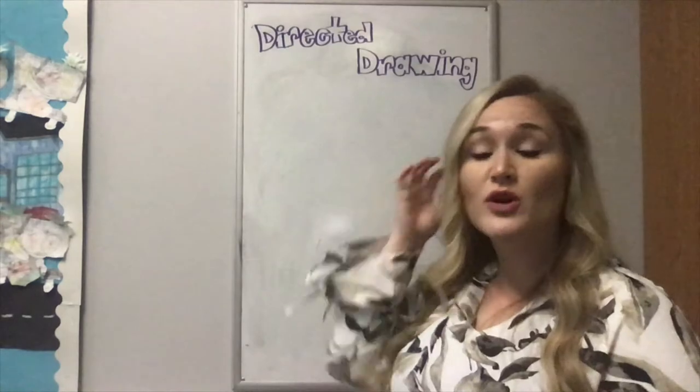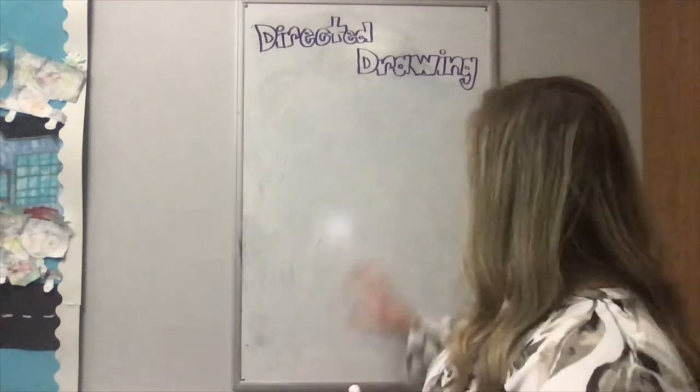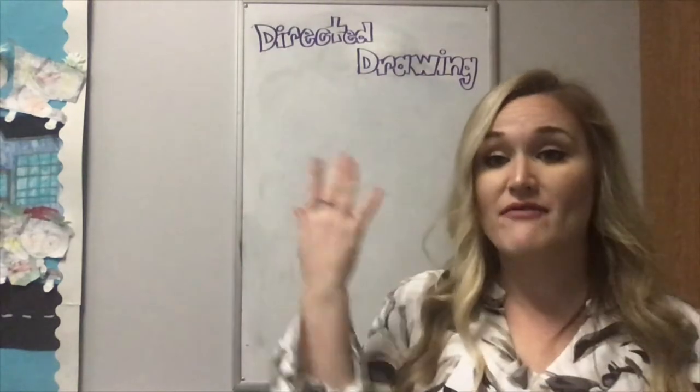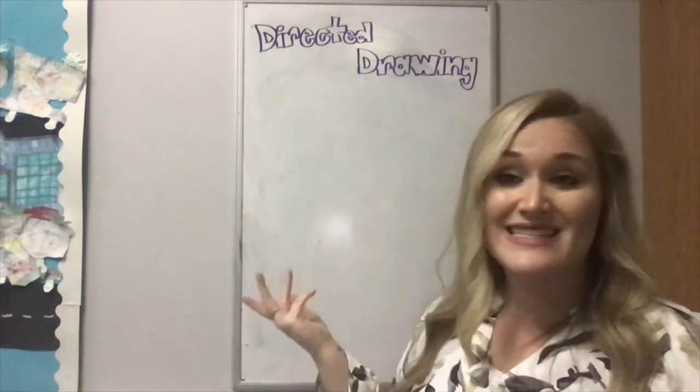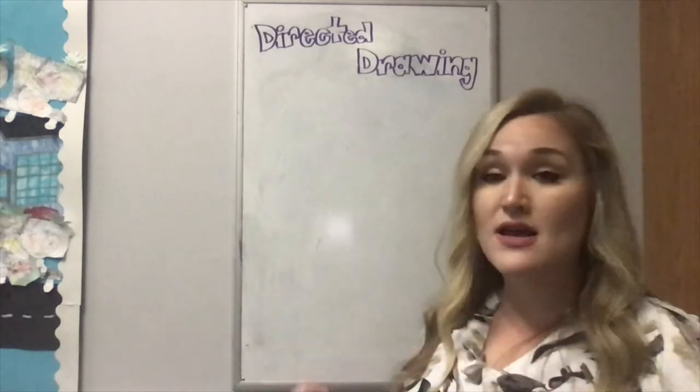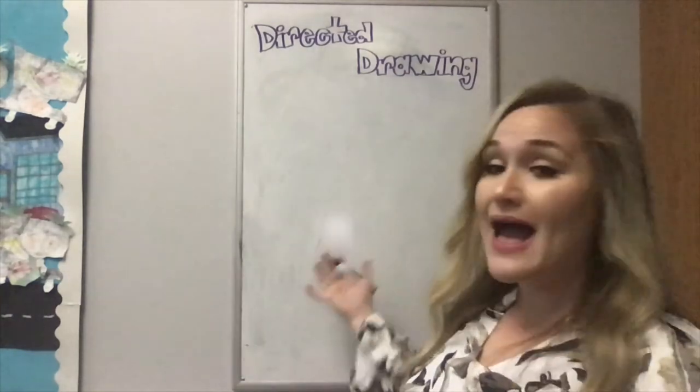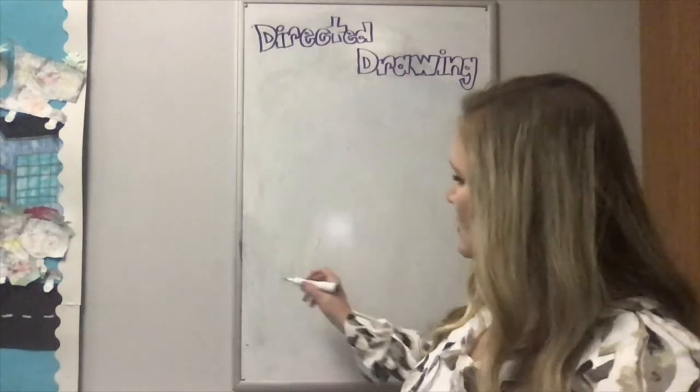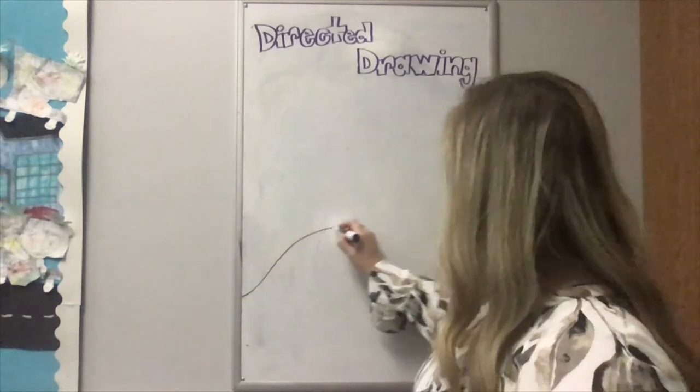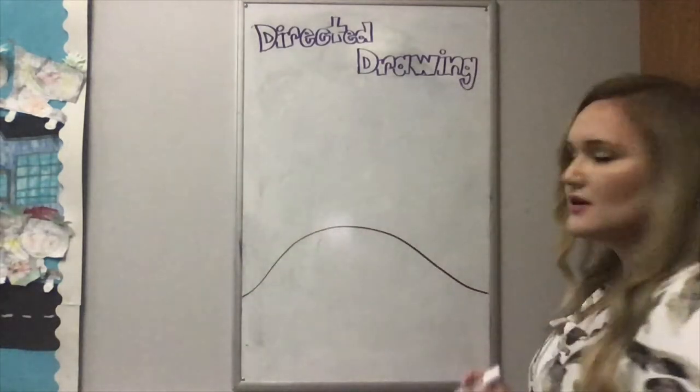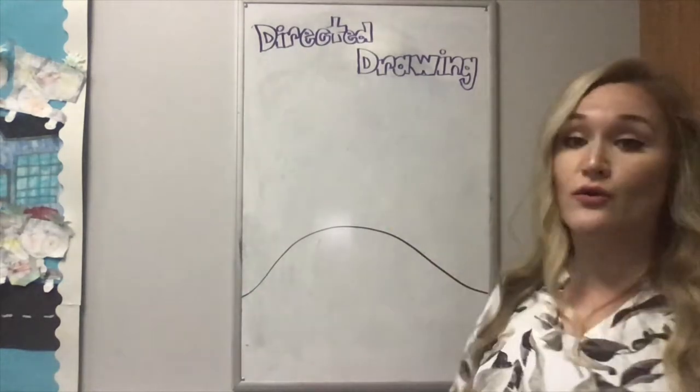So the first thing we're going to do is we're going to draw a caterpillar hill. So on our paper, whatever you have, if you have a regular piece of white paper, or if you have a whiteboard like me, or if you want to take this video outside and draw it on the driveway with some chalk, whatever you want, we're going to start with our hill. And the hill is simply up like this and down, right? So it's not a straight line. It's one large curve.